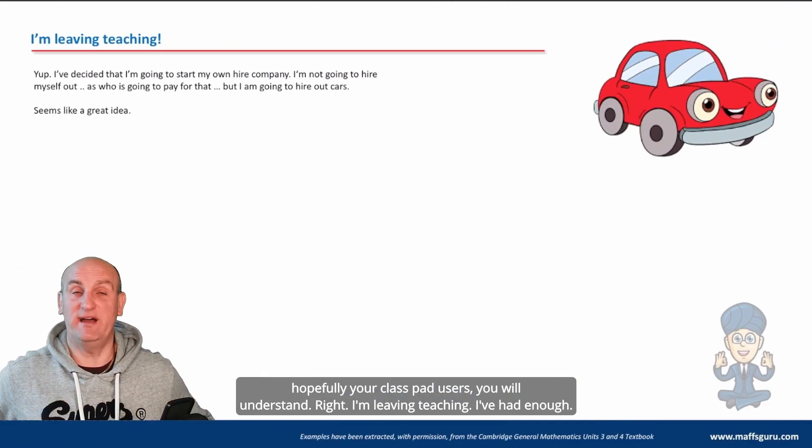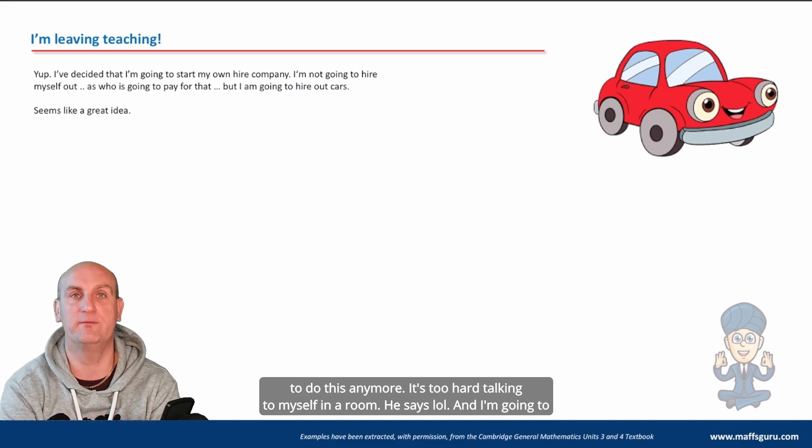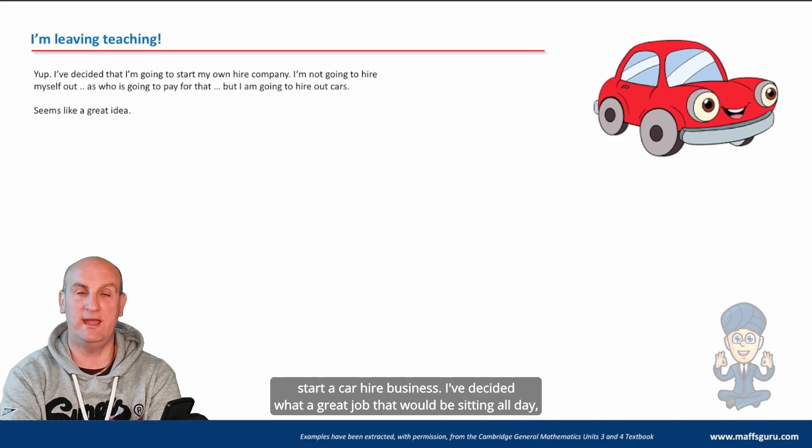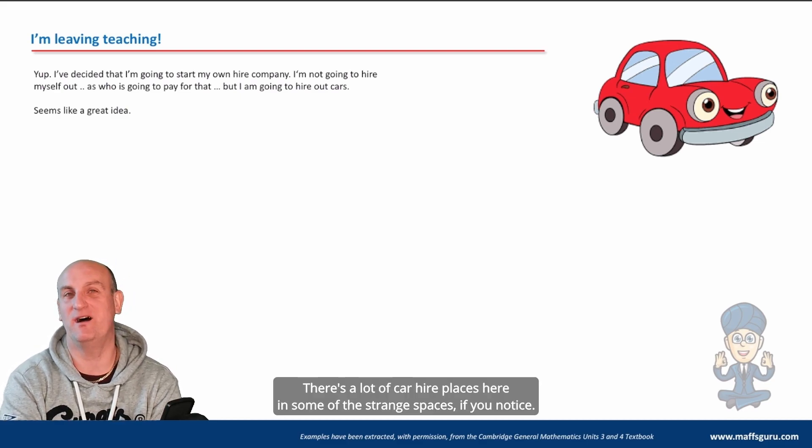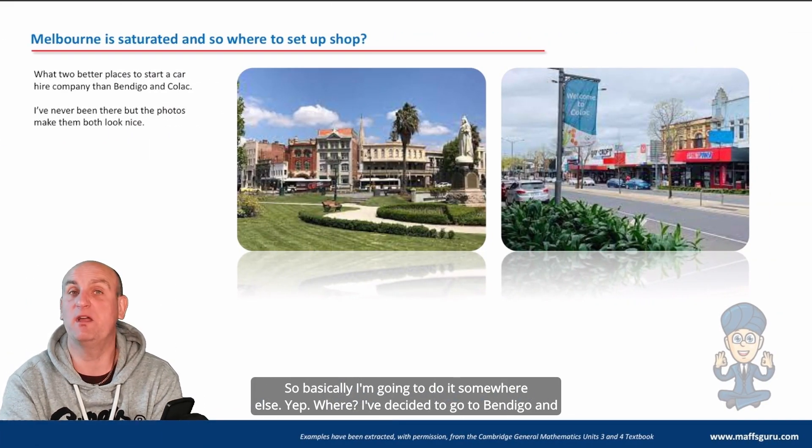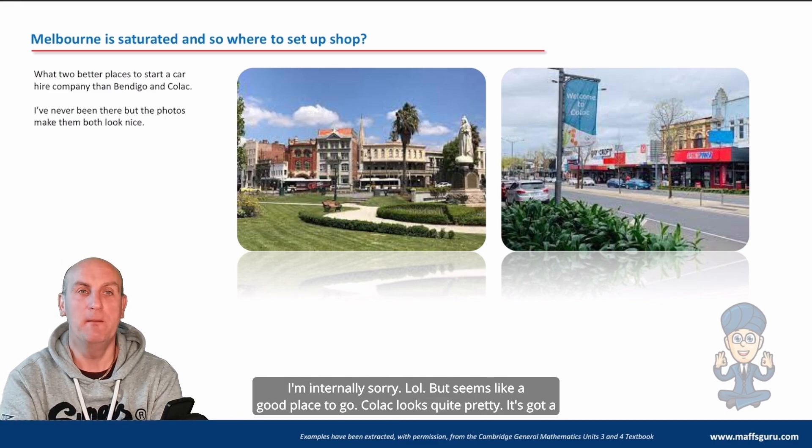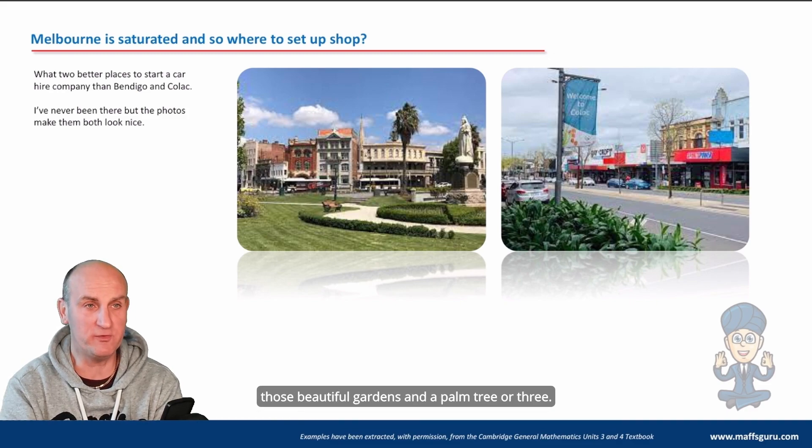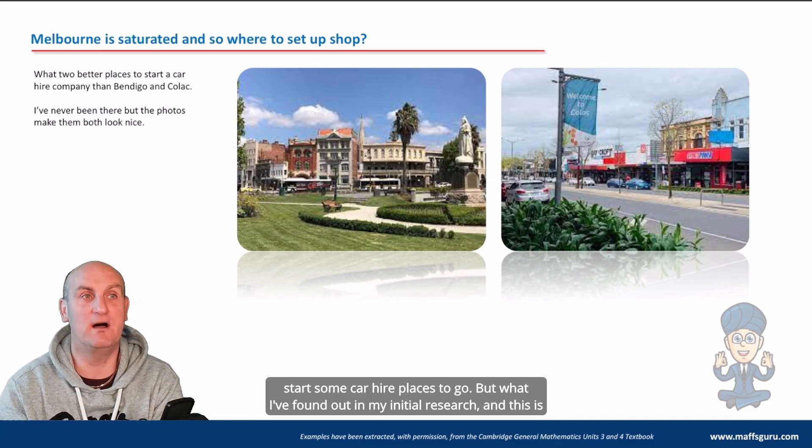Right. I'm leaving teaching. I've had enough. I don't get enough subscribers. I am literally dropping the mic and I am giving up. I don't want to do this anymore. It's too hard. Talking to myself in a room, he says. And I'm going to start a car hire business. I've decided what a great job that would be, sitting all day just giving out cars. And well, that's it. Well, the problem is Melbourne is a bit saturated. There's a lot of car hire places here in some of the strangest places, if you notice. So basically, I'm going to do it somewhere else. Where? I've decided to go to Bendigo and Colac. Yes. No idea where Colac is. I know that some of my students are at Bendigo and for that, I'm eternally sorry. But seems like a good place to go. Colac looks quite pretty. It's got a sign, it says welcome to Colac. Bendigo. Look at those beautiful gardens and a palm tree or three. Lovely. So yes, I'm going to go there. I've never been there before in my life, but I'm going to start some car hire places.